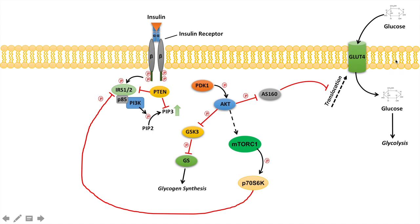What happens when insulin is dislodged from the insulin receptor? GLUT4 localization to the plasma membrane is entirely dependent on the presence of insulin and activation of the insulin receptor. Once insulin is dislodged and the receptor is no longer stimulated, GLUT4 will be taken back up into GLUT4-containing vesicles for the next time the cell is stimulated by insulin. Glucose will no longer be transported into the cell.